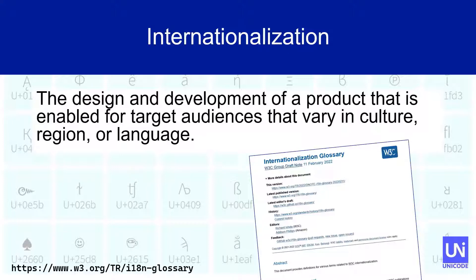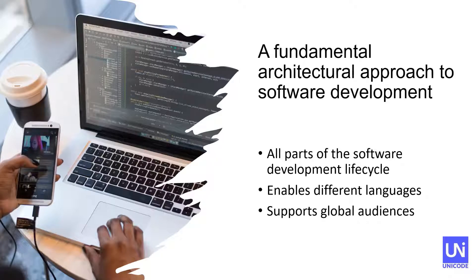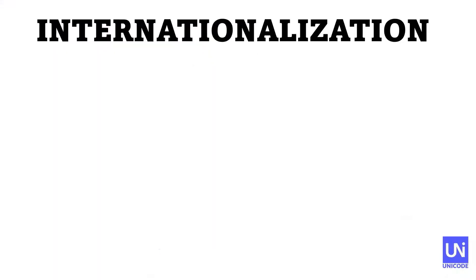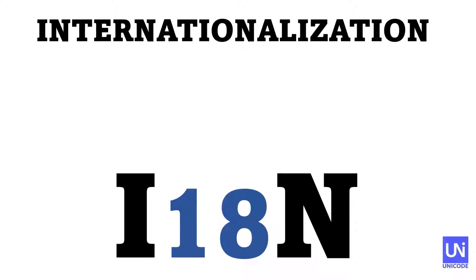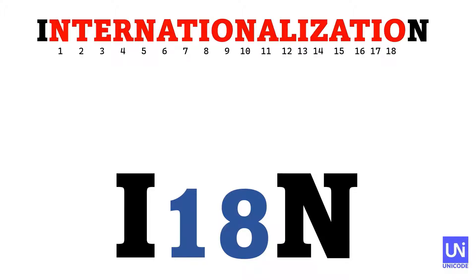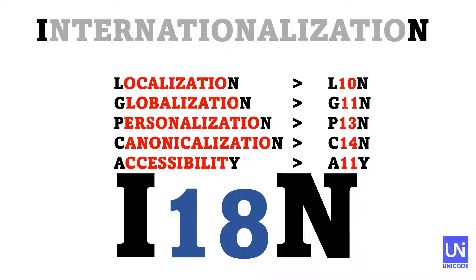So what is internationalization? I like the definitions we have in the W3C's internationalization glossary. Internationalization is the design and development of a product that is enabled for target audiences that vary in culture, region, or language. It's a software development discipline that touches every aspect of the development life cycle from design to coding to test and release. The word internationalization is long — 20 letters and eight syllables — so you'll sometimes see it replaced with i18n, where the 18 stands for the number of letters omitted. This odd practice is occasionally used for other terms like localization, or elsewhere in the industry for terms like accessibility as A11Y or personalization as P13N.